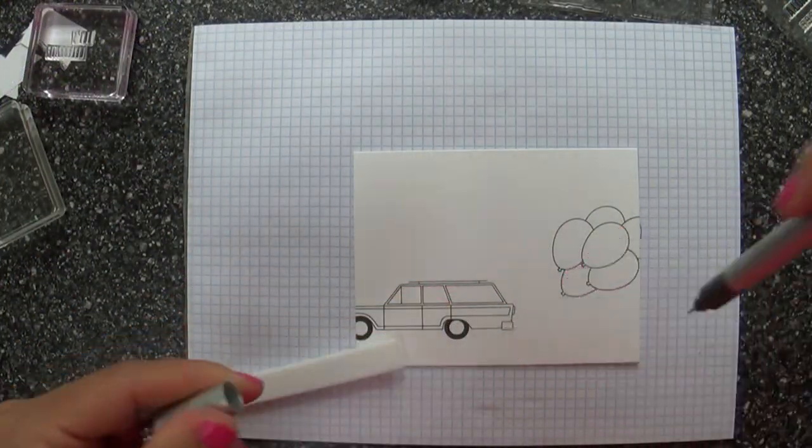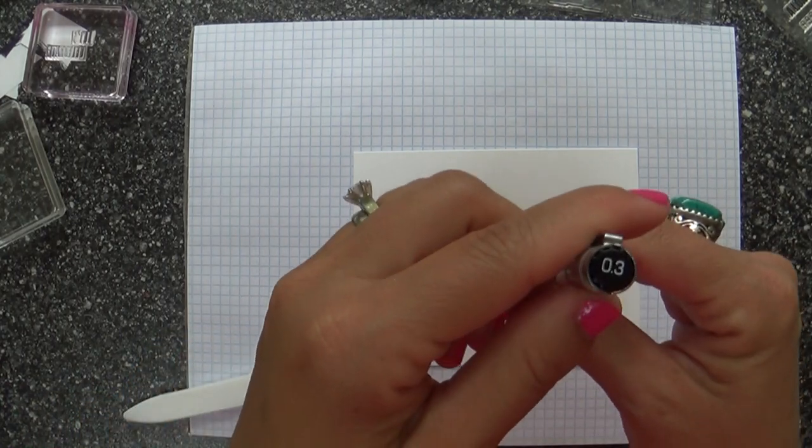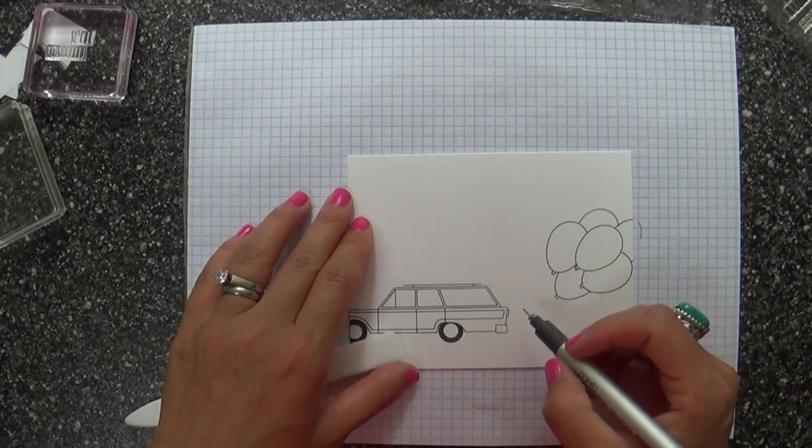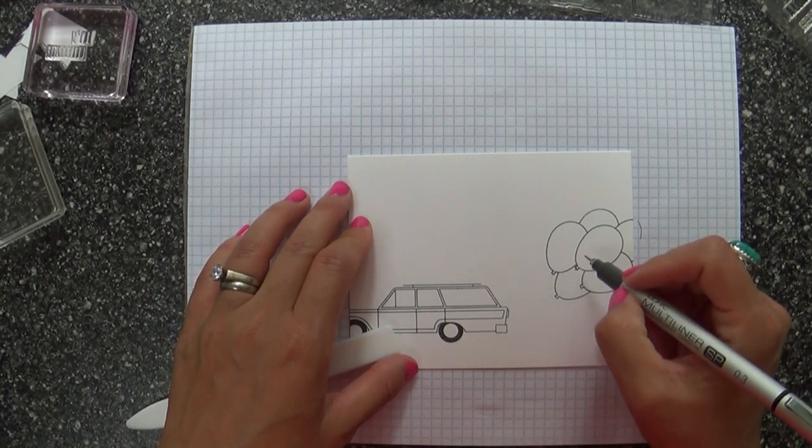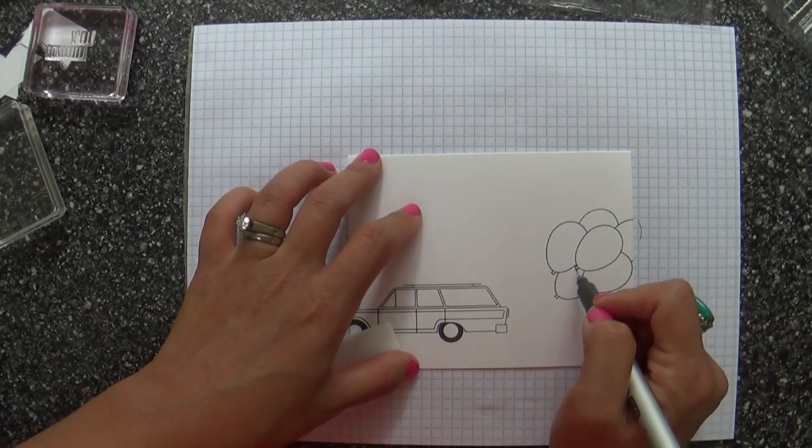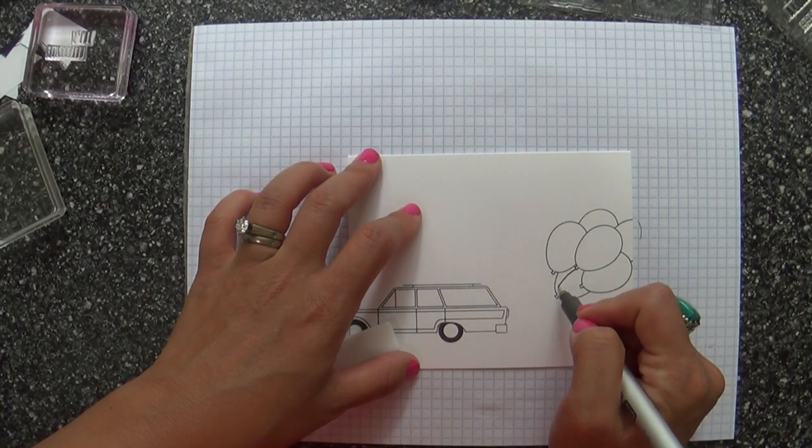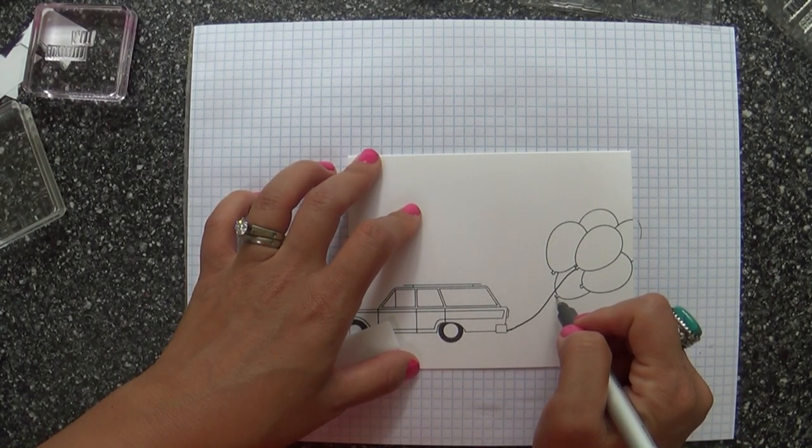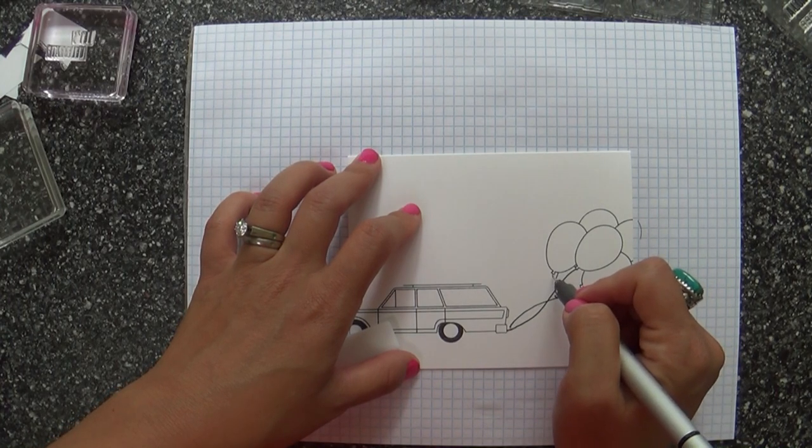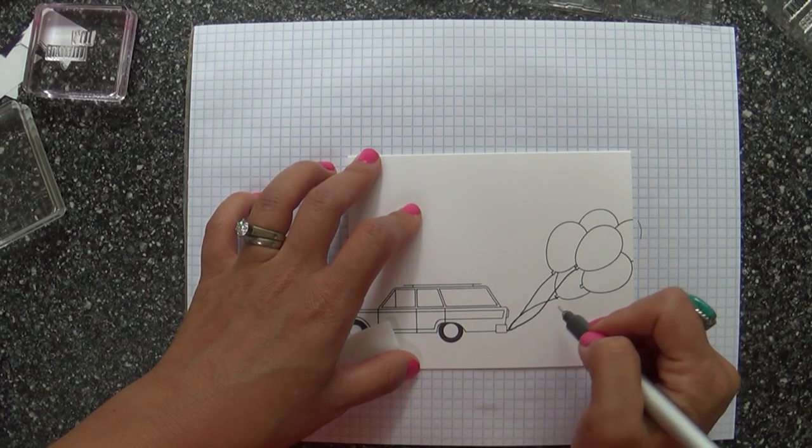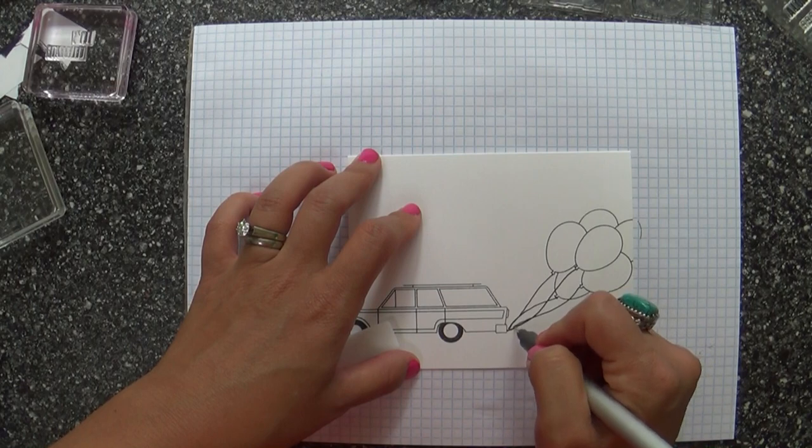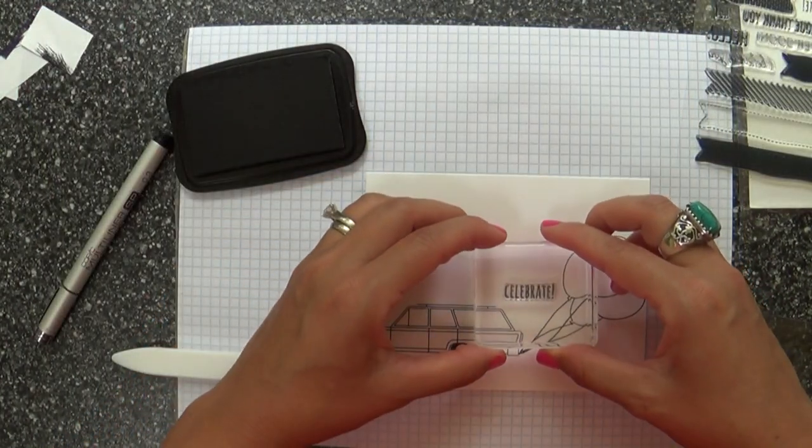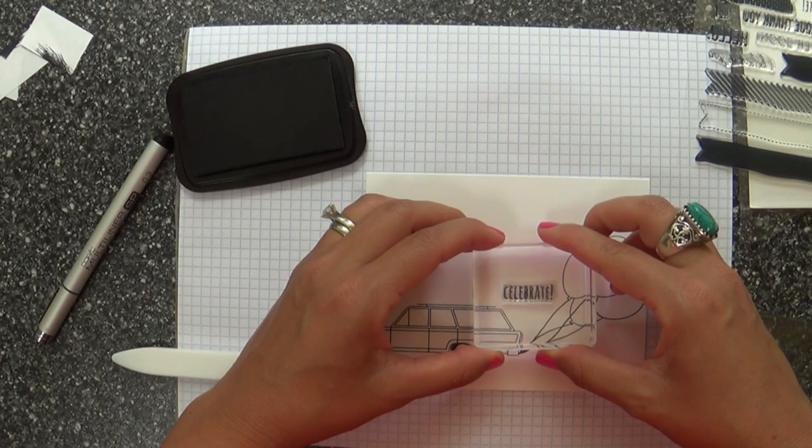Now I've got this Copic multiliner, it's in the 0.3 thickness. I just got this. So now I feel like I'm really stepping it up a notch from my Sharpie pen. It's basically the same thing, but I think it comes even in a thinner one and I want to get that one too, but this is really perfect for just freehand drawing these balloon strings and stuff like that, that I do all the time. You never realize how much you need just a really fine black tip pen for your paper crafting.